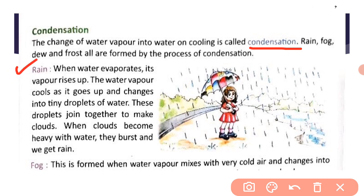First is rain. When water evaporates, it vaporizes upward. Water vapor cools as it goes up and changes into tiny droplets of water. These droplets join together to make clouds. When clouds become heavy with water, they burst and we get rain. Jab clouds mein water itna zyada ektra ho jaata hai ki clouds hold nahi kar paate, toh baarish milti hai.